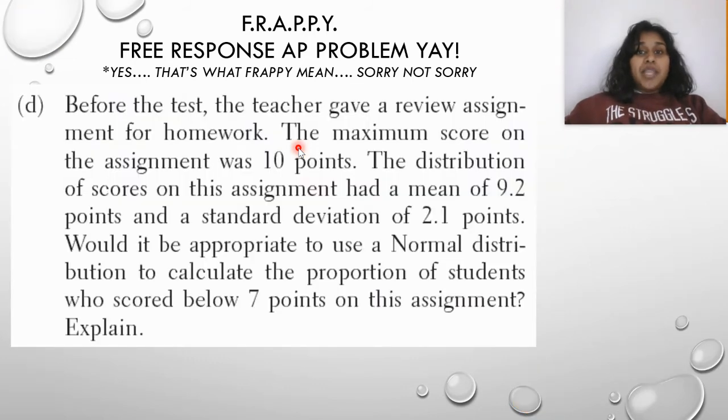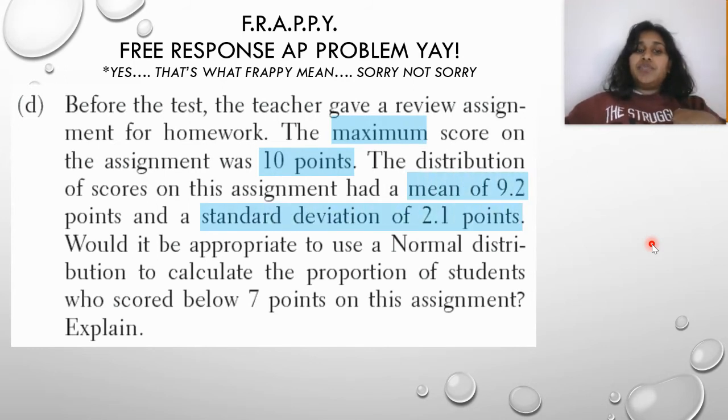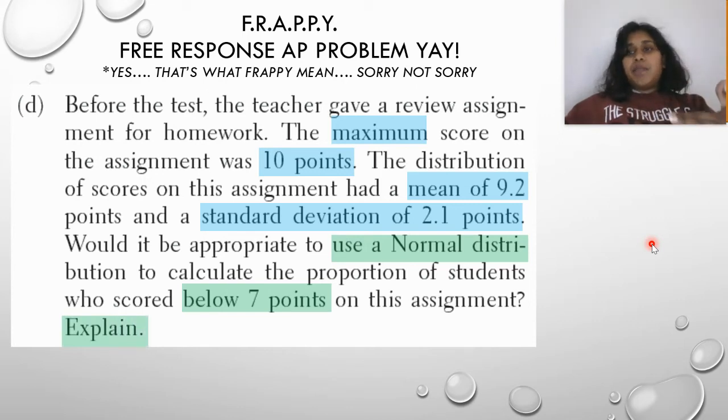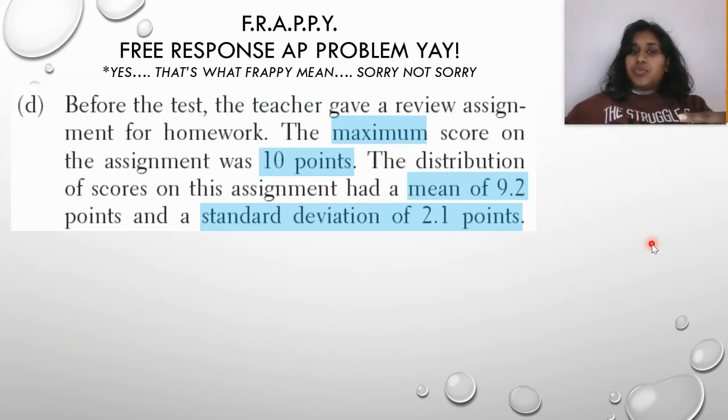And our last question. This one's a little bit more of a, you got to think it through yourself. So before the test, the teacher gave a review assignment for homework. Max score was 10 points. Mean of 9.2. Standard deviation of 2.1. Would it be appropriate using a normal distribution to calculate the proportion of students who scored below seven points? And of course, explain. Well, let's break that up into a little bit. We want to focus on a normal distribution. So why not try to create a normal distribution?